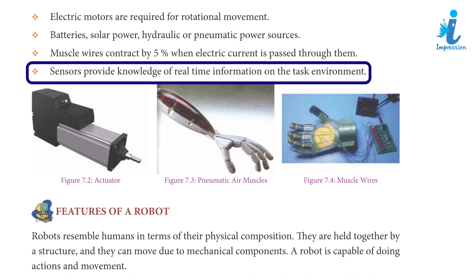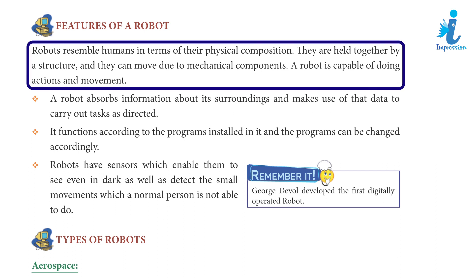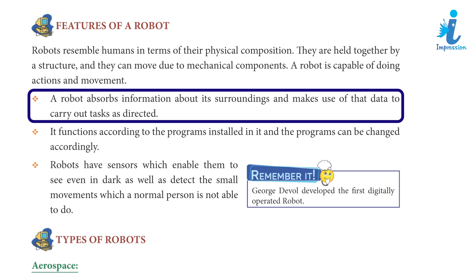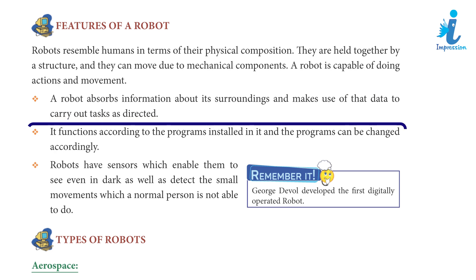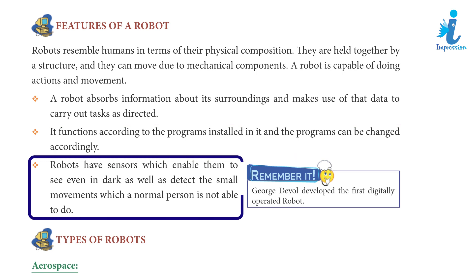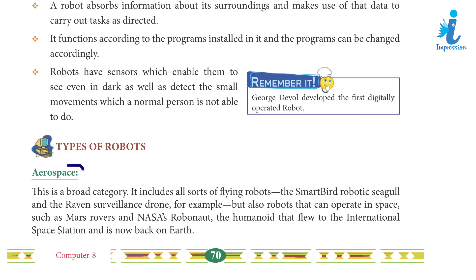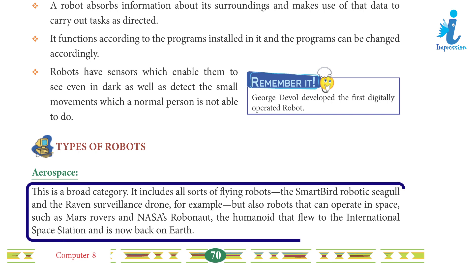Features of a Robot: Robots resemble humans in terms of their physical composition. They are held together by a structure and can move due to mechanical components. A robot is capable of performing actions and movements. A robot observes information about its surroundings and makes use of that data to carry out tasks as directed. It functions according to the program installed in it, and the program can be changed accordingly. Robots have sensors which enable them to see even in the dark and detect small movements that a normal person cannot. George DeWall developed the first digitally operated robot.